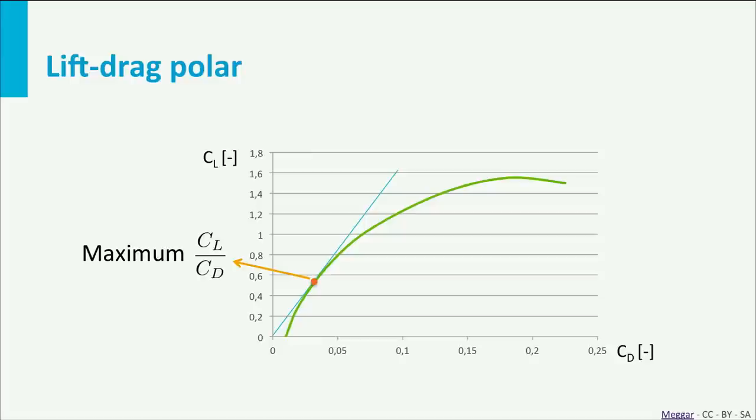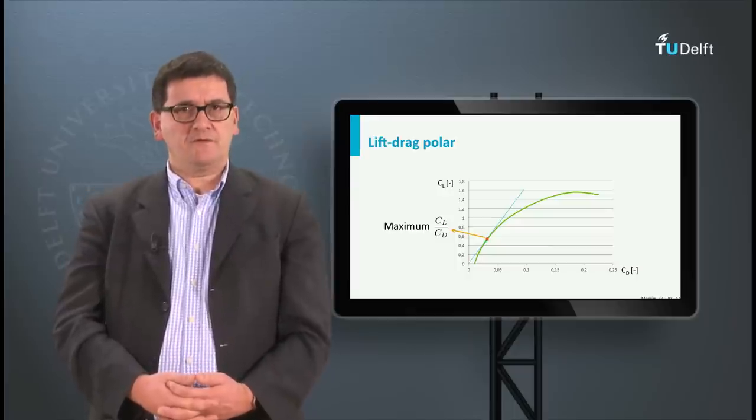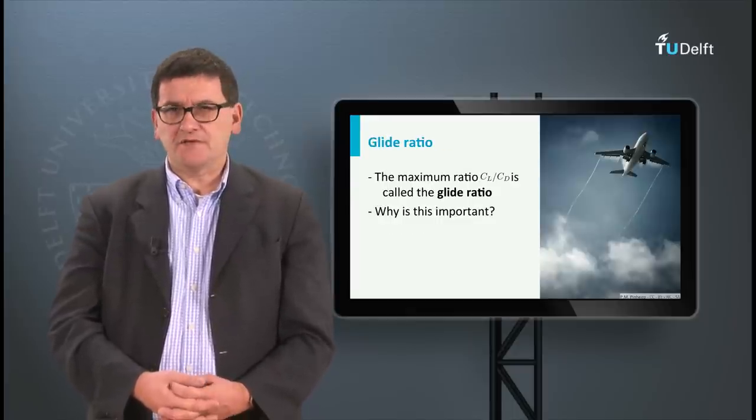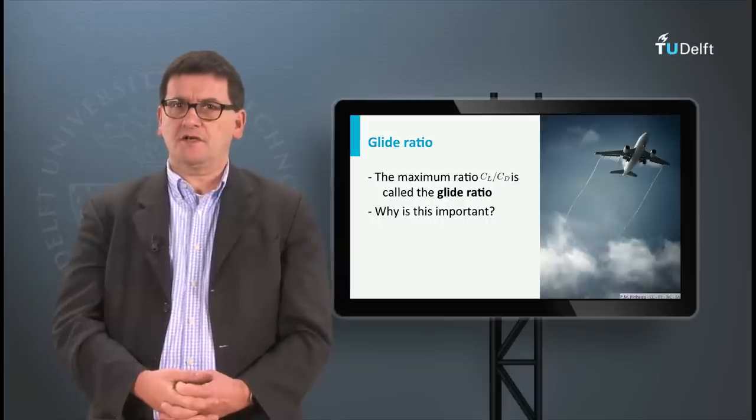That is, the point with the highest CL-CD ratio. This ratio can be found by drawing the tangent to the curve. The maximum CL-CD ratio is called the glide ratio.